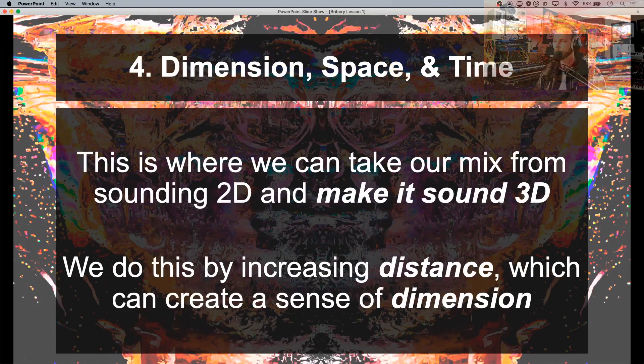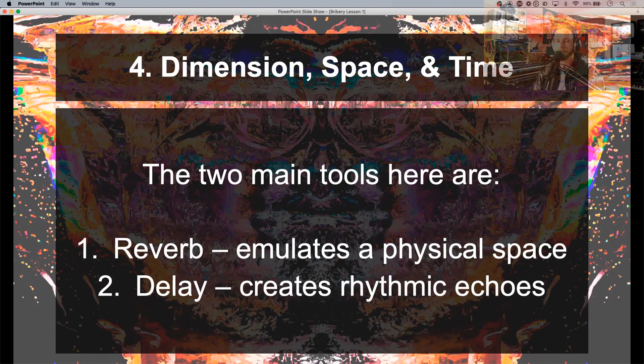Then we get to point four: Dimension, space, and time. This is where we can take our mix that might sound 2D and make it sound 3D. We do this by increasing distance, which can create a sense of dimension. Many of you might know what I'm already talking about, or you might not — this is one of the areas of tools where people either don't add enough or they add way too much. And of course, I'm talking about reverb and delay.